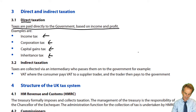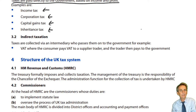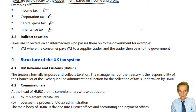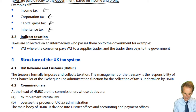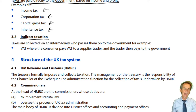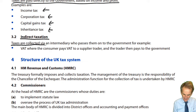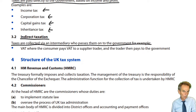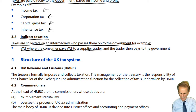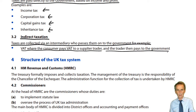What happens with VAT is somewhat different. If you're not used to the name Value Added Tax, what you may be used to in your domestic system is a sales tax. This is known as indirect taxation. The individual does not pay that tax directly over to HMRC — there is an intermediary. Taxes are collected via an intermediary who passes them on to the government. With VAT, the consumer pays VAT to a supplier trader, and the trader then pays it over to the government.